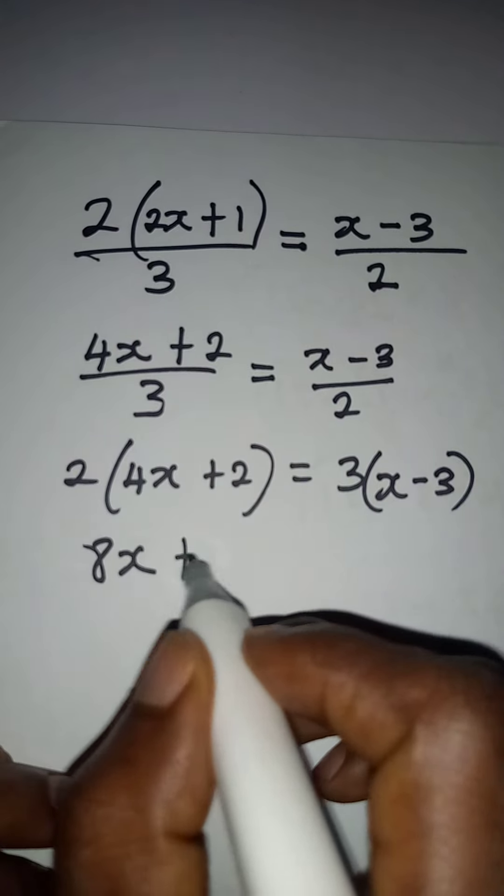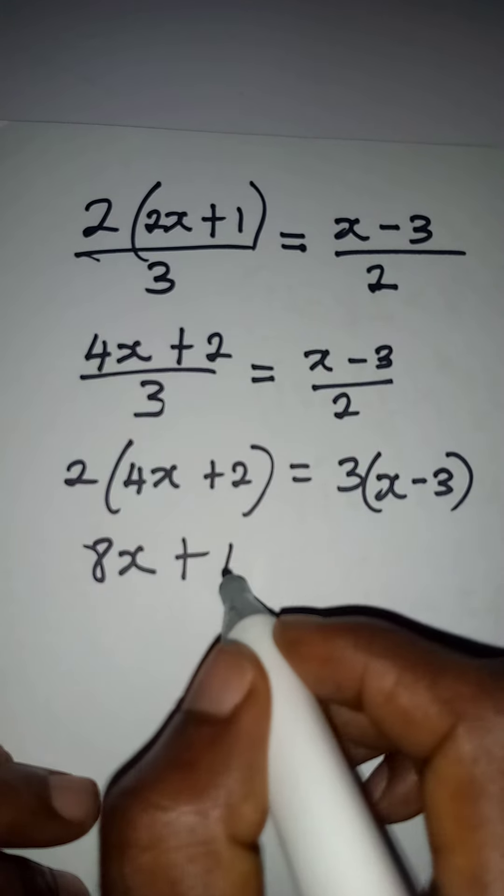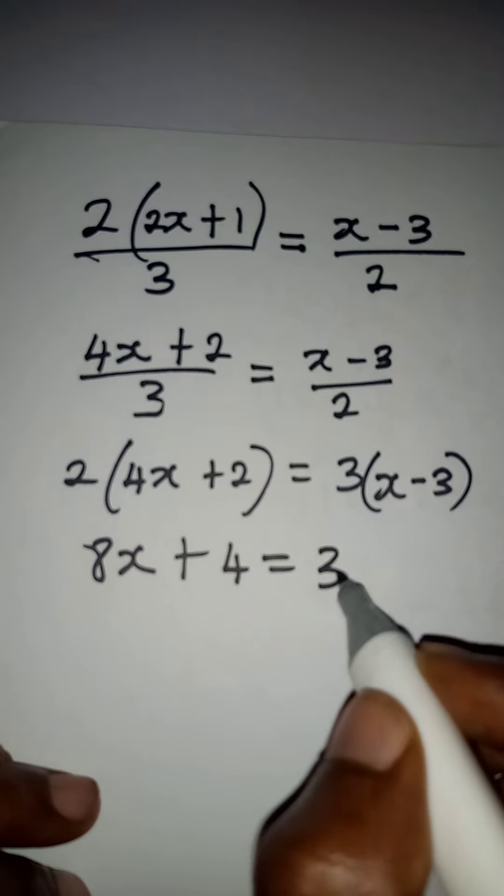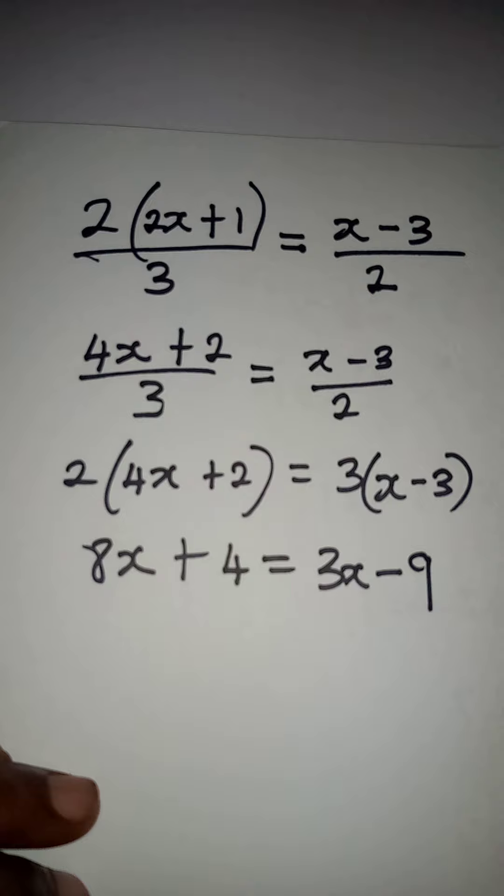Then open the bracket here. I'm going to have 8x plus, 2 times 4x is 8x, 2 times 2 that will give 4, which will be equal to 3 times x which is 3x, then minus 3 times 3 which will give 9.